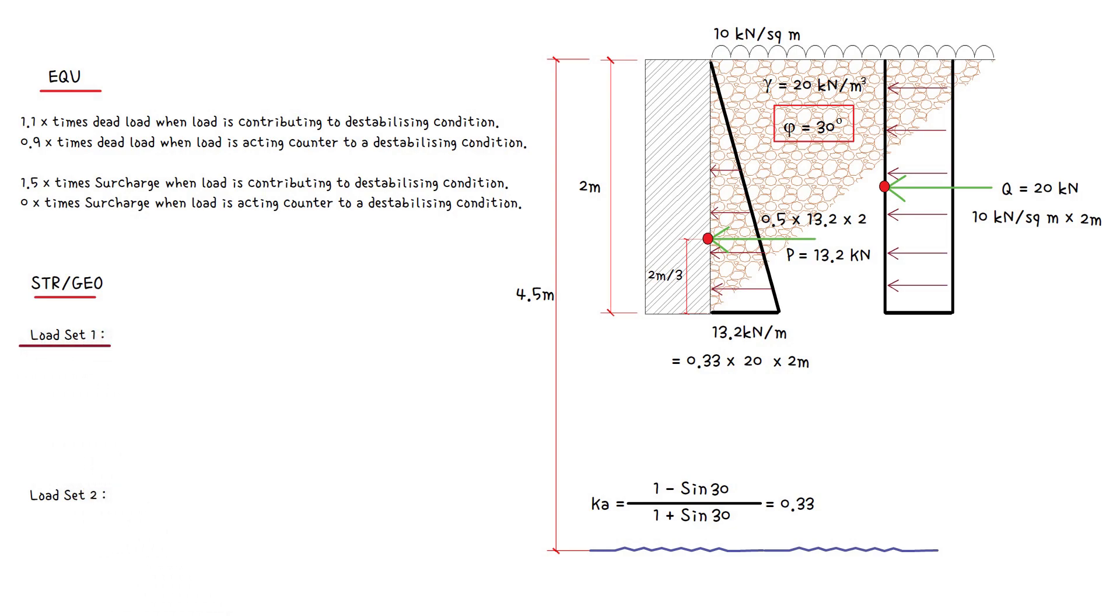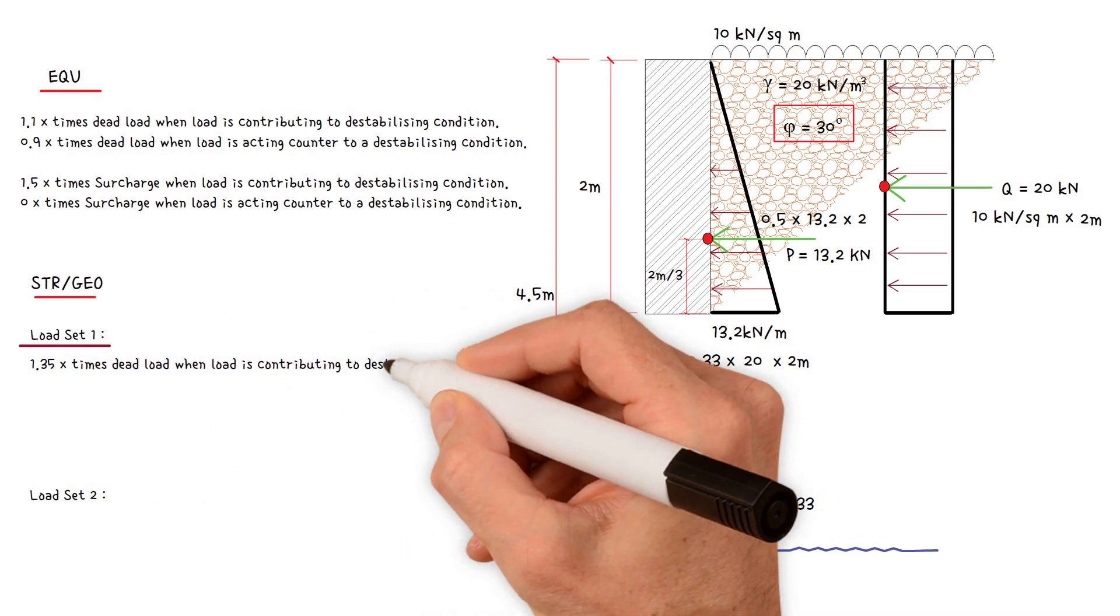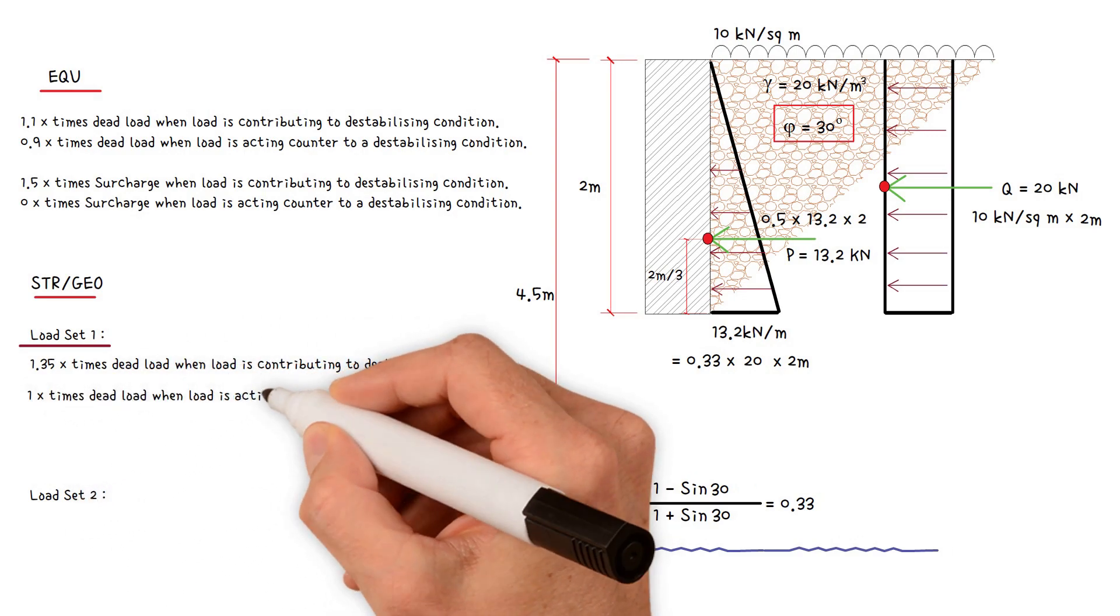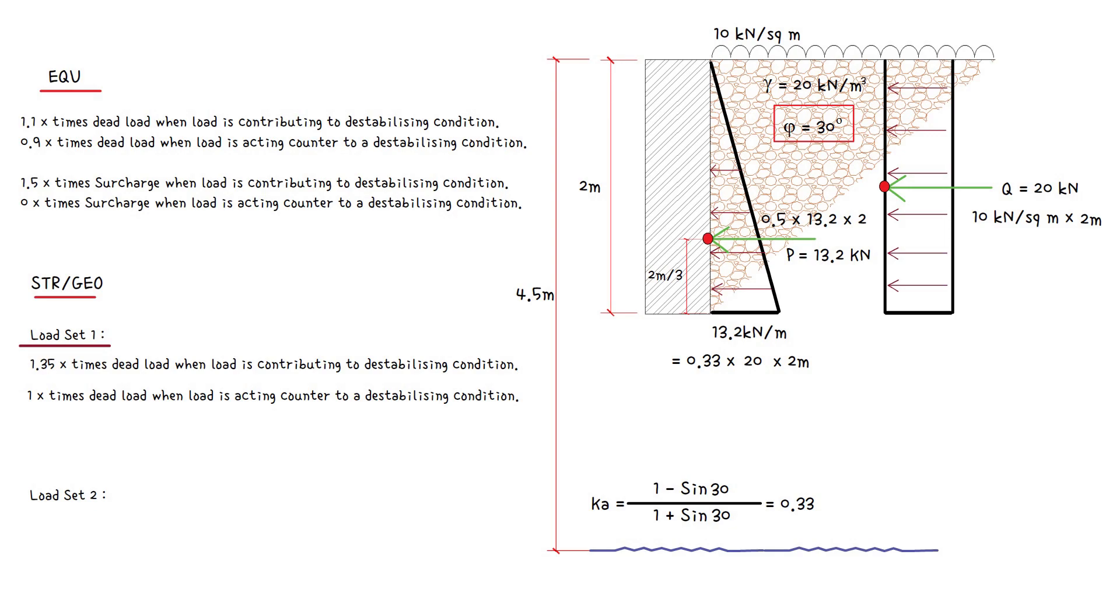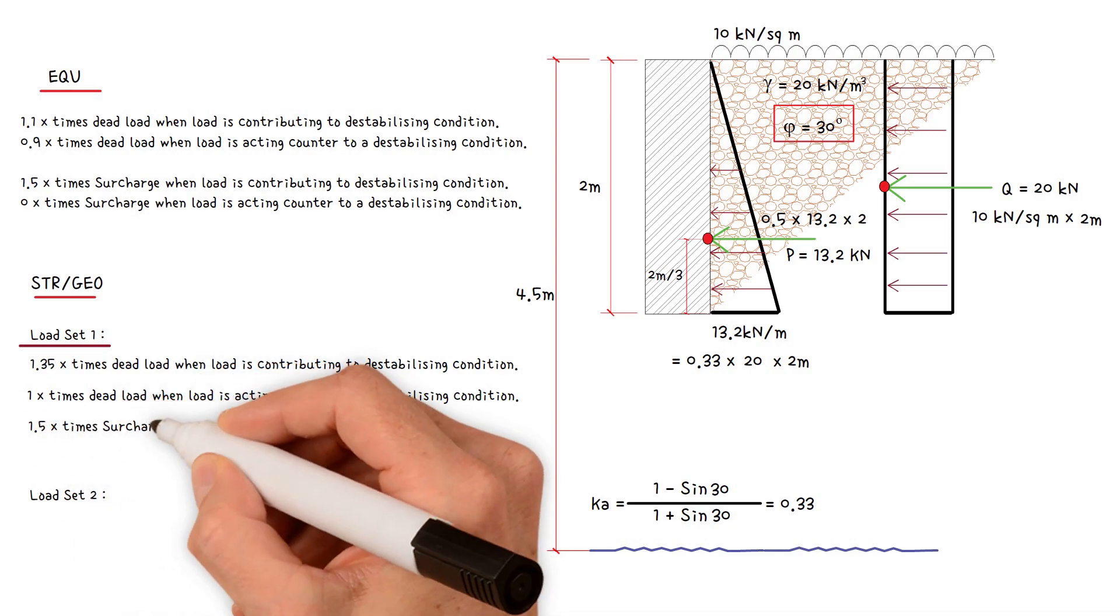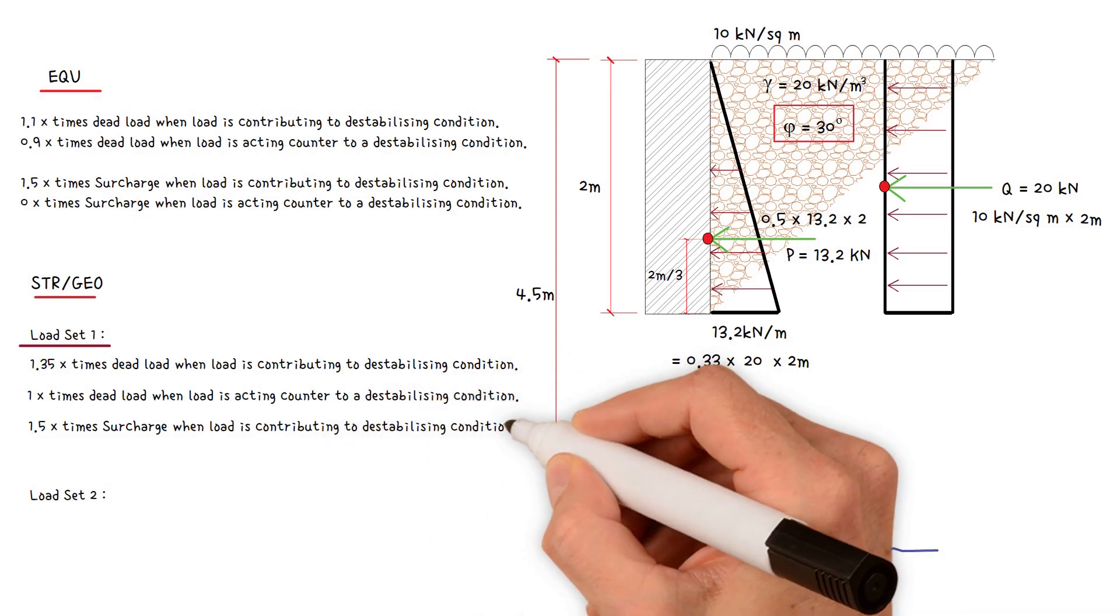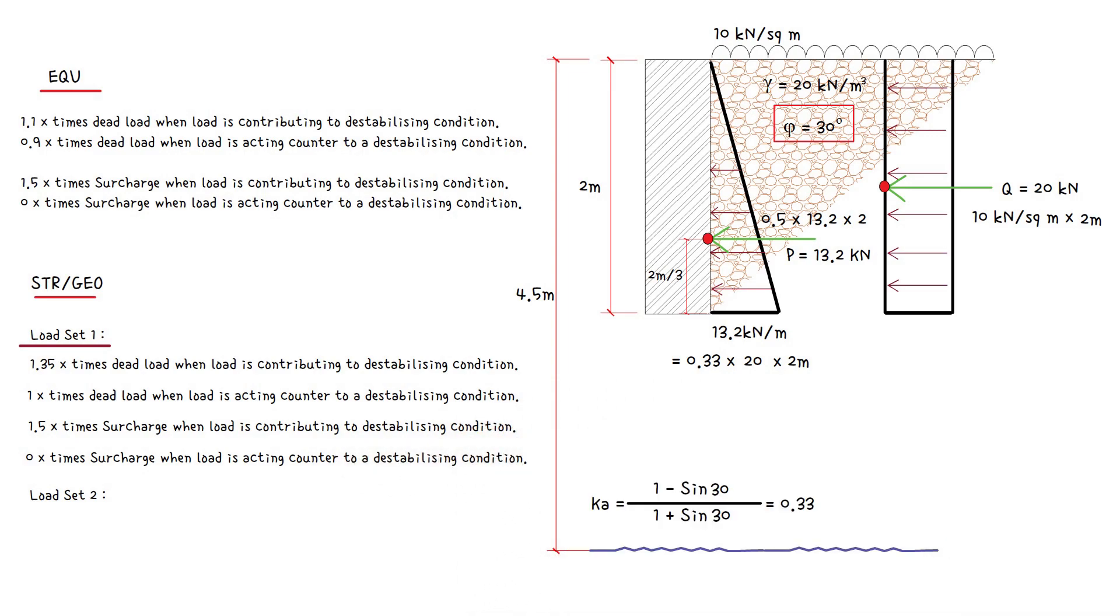Load set 1: 1.35 times dead load when load is contributing to destabilizing condition; 1 times dead load when load is acting counter to a destabilizing condition; 1.5 times surcharge when load is contributing to destabilizing condition; 0 times surcharge when load is acting counter to a destabilizing condition.